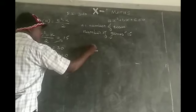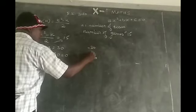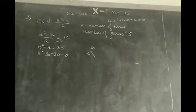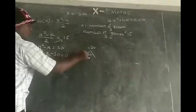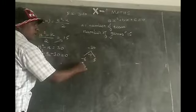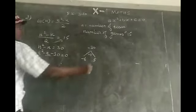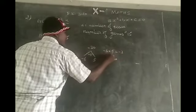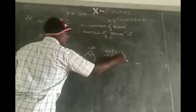Now factor. The product is minus 30 and the sum is minus 1. Split this into minus 6 into 5. Minus 6 into 5 is minus 30. Minus 6 plus 5 is minus 1.